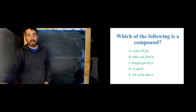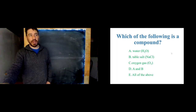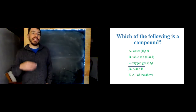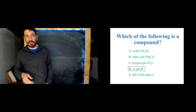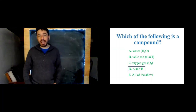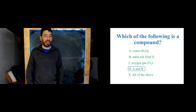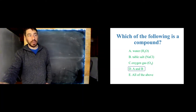Now let's talk about compounds. If an element is just one type of atom, what's a compound? Which of these are compounds? A and B are compounds and C is an element, because C is only made of one type of atom. A and B are compounds because they're made of more than one type of atom. Table salt is an ionic compound because it's made of a metal and a nonmetal, whereas water is a molecular compound held together with covalent bonds because it's made of only nonmetals.